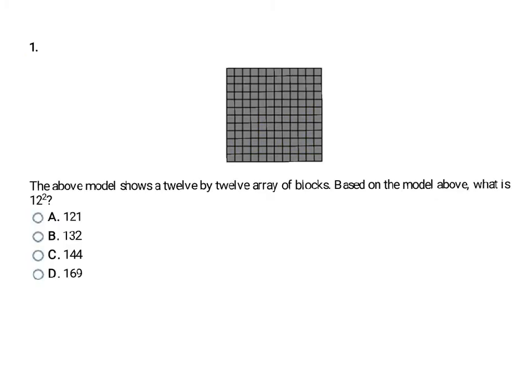Here's a problem where they give us a model. The model shows a 12 by 12 array of blocks, so each side is 12. Based on the model, what is 12 squared? You could count them all up or use multiplication. To find the area of that square, take 12 times 12 - that's what 12 squared means, 12 times itself, not 12 times 2. When you take 12 times 12, you get 144. The final answer is C.